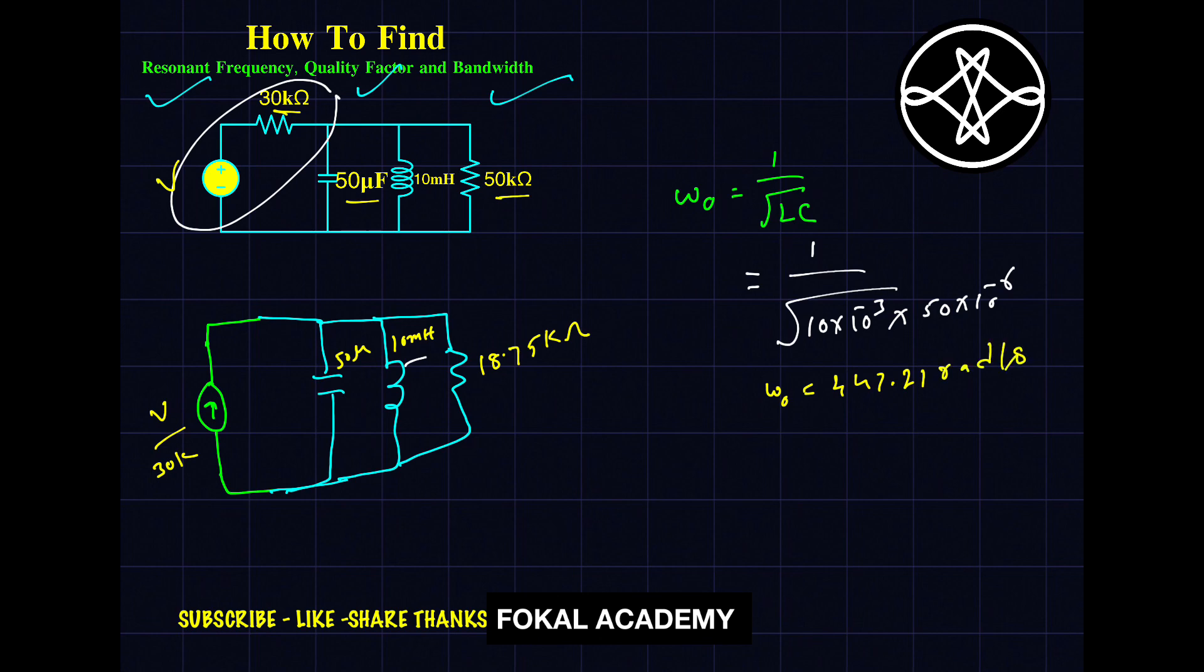Next we are going to find bandwidth. Bandwidth can be written as 1 by RC. R means equivalent resistance, that is 1 by 18.75 kilo ohms into capacitance.